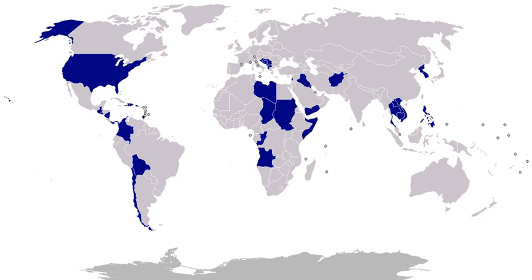1901, Colombia, State of Panama, November 20 to December 4: U.S. forces protected American property on the isthmus and kept transit lines open during serious revolutionary disturbances. 1902, Colombia, April 16 to 23: U.S. forces protected American lives and property at Bocas del Toro during a civil war. 1902, Colombia, State of Panama, September 17 to November 18: the United States placed armed guards on all trains crossing the isthmus to keep the railroad line open, and stationed ships on both sides of Panama to prevent the landing of Colombian troops.